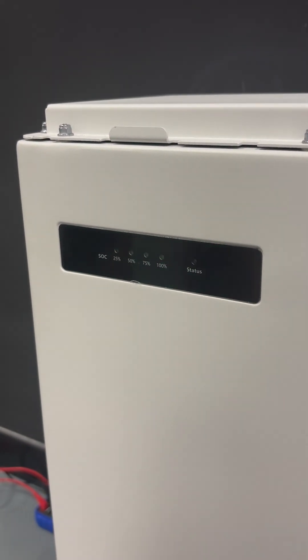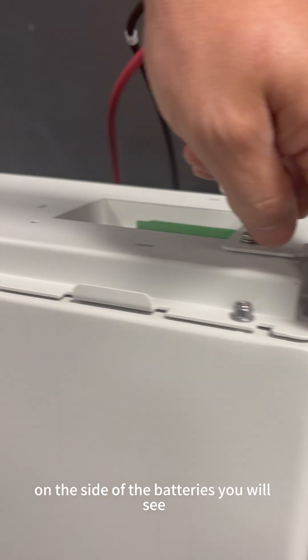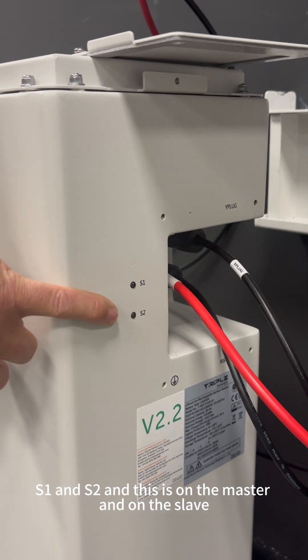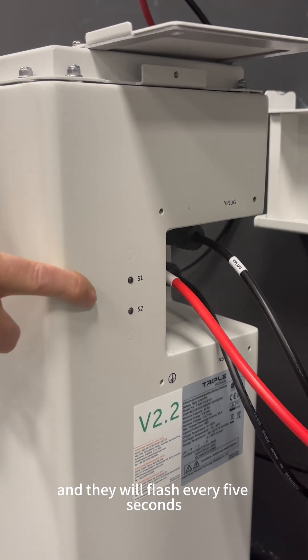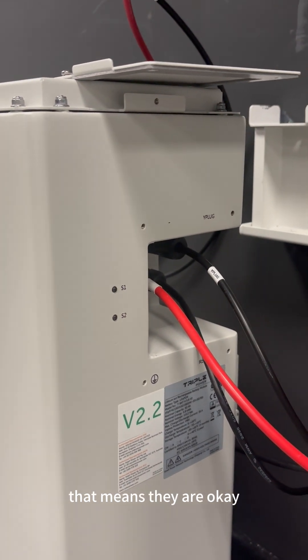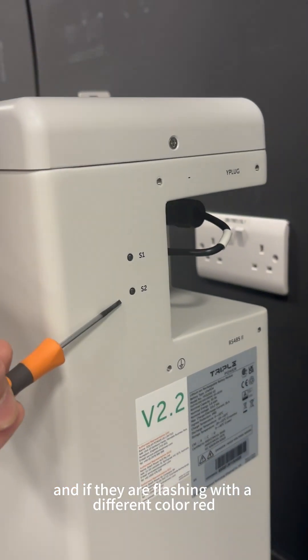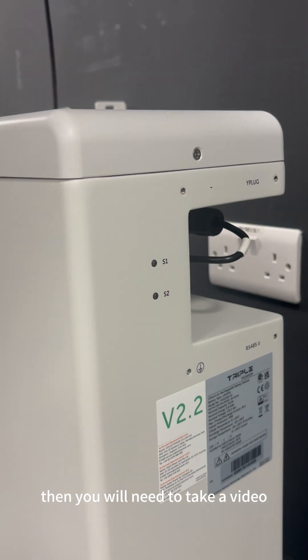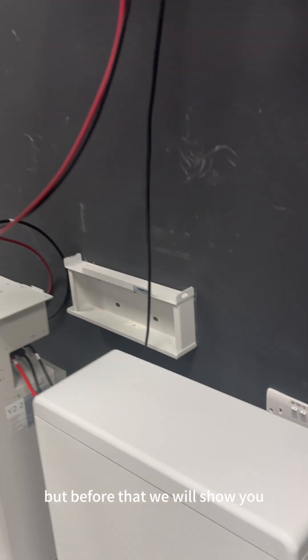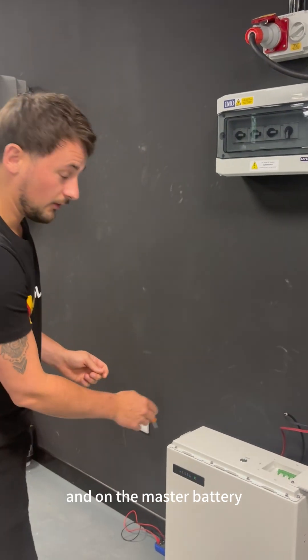Now you've seen that that's green on the side of the batteries. You will see S1 and S2 and this is on the master and on the slave and they will flash every five seconds. When they are both flashing green that means they are okay. If they are flashing with a different color, i.e. red, then you will need to take a video and get in touch with us. But before that, we will show you some tips on how to measure the voltage on the slave battery and on the master battery.